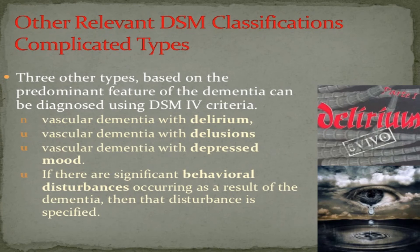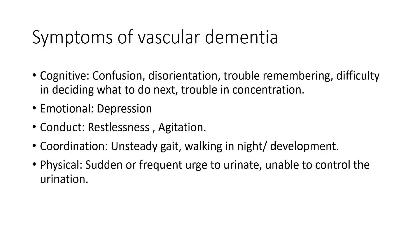Other relevant DSM classifications include complicated types: vascular dementia with delirium, vascular dementia with delusions, and vascular dementia with depressed mood; if significant behavioural disturbance occurs, it is specified. Symptoms of vascular dementia include cognitive symptoms such as confusion, disorientation, trouble remembering, difficulty deciding what to do next, and trouble concentrating. Emotional symptoms include depression. There is also restlessness and agitation, unsteady gait, and physical symptoms such as sudden or frequent urge to urinate and inability to control urination.